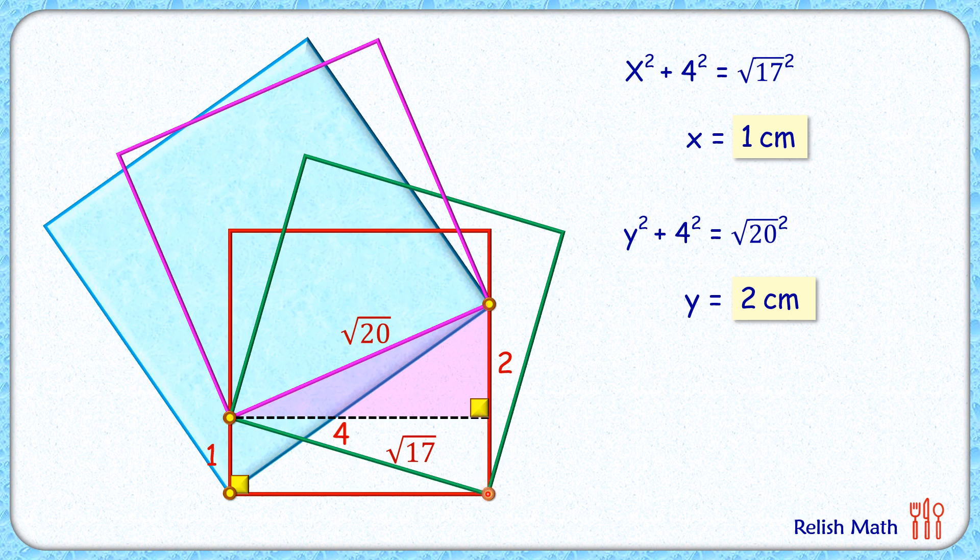And this remaining length here that will be same as this one. So this remaining length here is 1 cm. Or here this length is nothing but 3 cm.